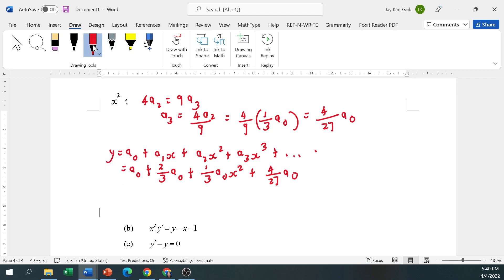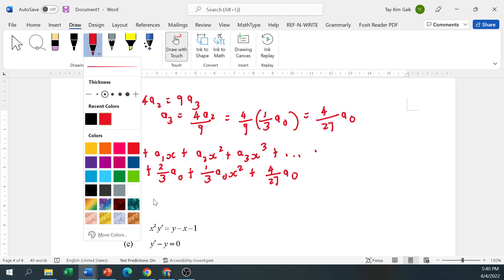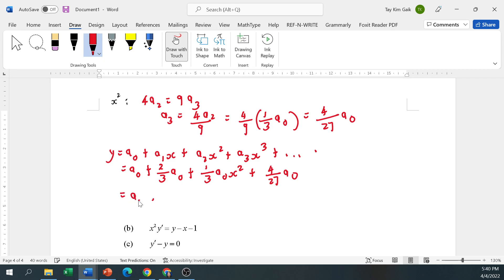Then you may factor a0. So 1, sorry this one x. So 2 thirds x plus 1 third x squared plus, oh sorry, this x cubed, 4 over 27 x cubed.